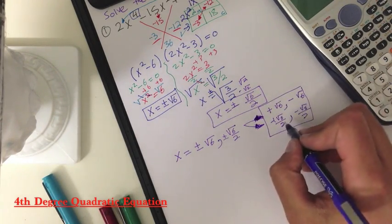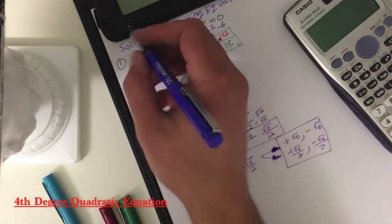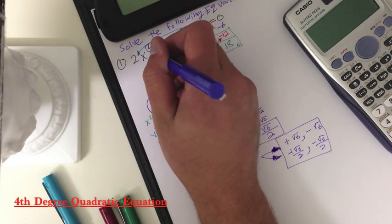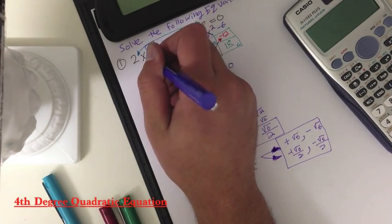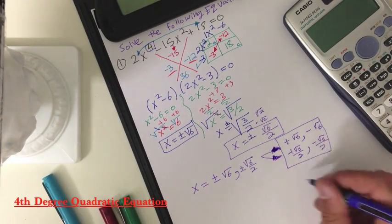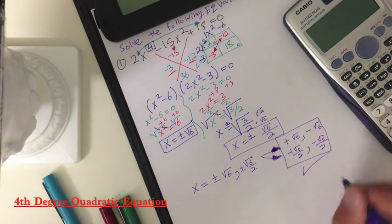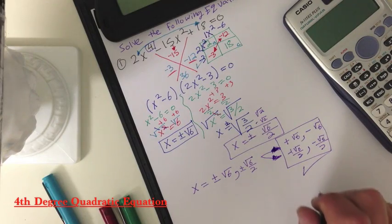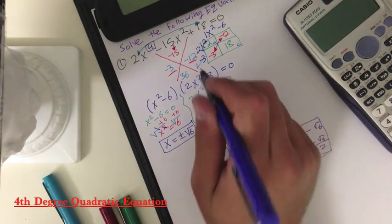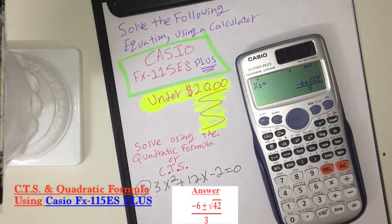And the way to know that is if you go up to your original equation, it's a fourth degree, so that means you will have four answers. And this is what we got right here, so this checks. And this method is super easy to use once you got the concept where everything goes.